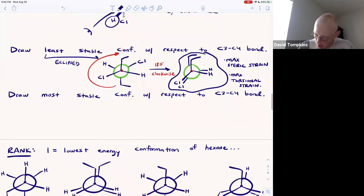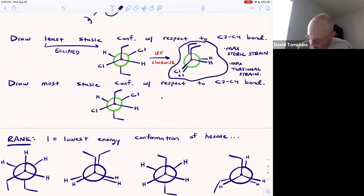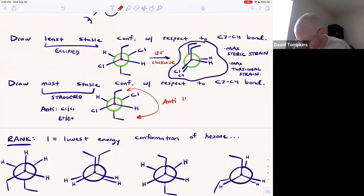I've actually already drawn the most stable conformation. The most stable one is a staggered conformation. Specifically, it's going to be staggered where we have anti-relationships between the large groups, the chlorines, and an anti-relationship between the ethyls. We can see here that those groups, the ethyls and the chlorines, are anti to one another, or 180 degrees. This will have not only the minimal steric strain, but it will also have the minimum torsional strain. None of those bonds are eclipsing.